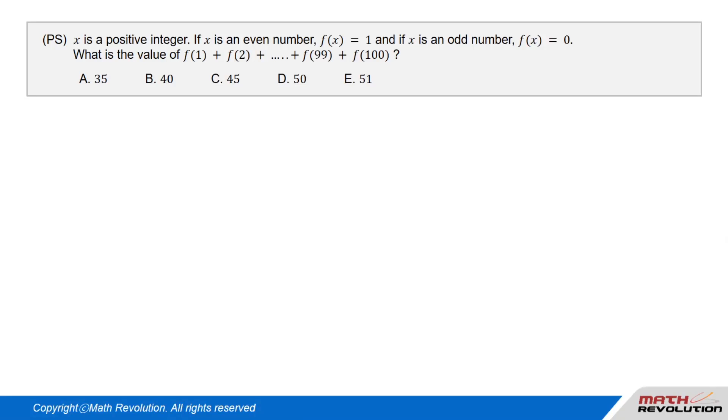Question. P.S. x is a positive integer. If x is an even number, f of x equals 1. And if x is an odd number, f of x equals 0. What is the value of f of 1 plus f of 2 and so on until f of 99 plus f of 100?